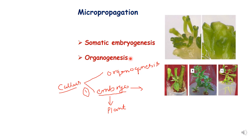Somatic embryogenesis is a one-step process where embryos are directly formed on somatic cells and give rise to new plants. Organogenesis is a two-step process where first shoots are formed, then roots are formed, and then the whole plant is formed. Both somatic embryogenesis and organogenesis can be direct or through a callus.